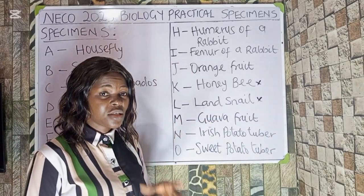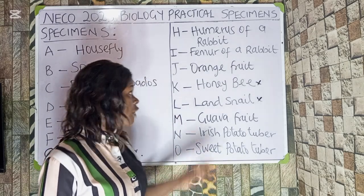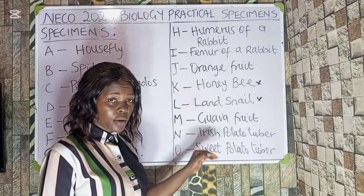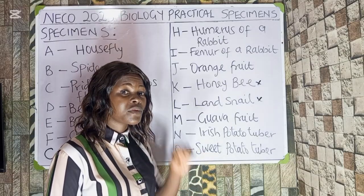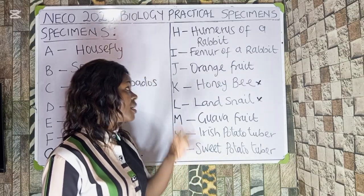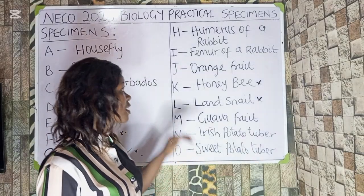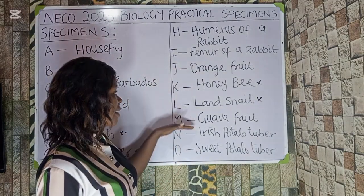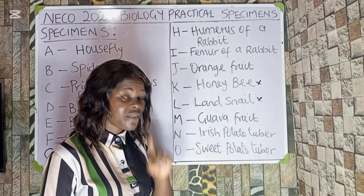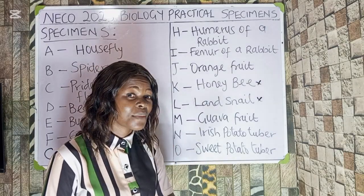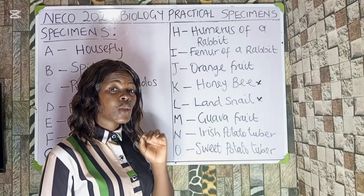Specimen J is orange fruit and Specimen M is guava fruit. You may be asked to state the placentation of these two specimens, or the observable differences between Specimen J and M. You should also note that Specimen J and M are perennial crops — this is very important and the examiner is likely to ask you this in the forthcoming exam. Also learn how to sketch the diagrams — that is very important.